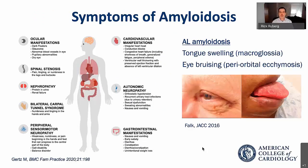AL and ATTR amyloidosis both cause symptoms of congestive heart failure and arrhythmia, and those are the principal cardiovascular manifestations. Conduction block and dysrhythmias like atrial fibrillation, as well as symptoms of congestive heart failure — either right- or left-sided — are the principal findings of cardiac amyloidosis.